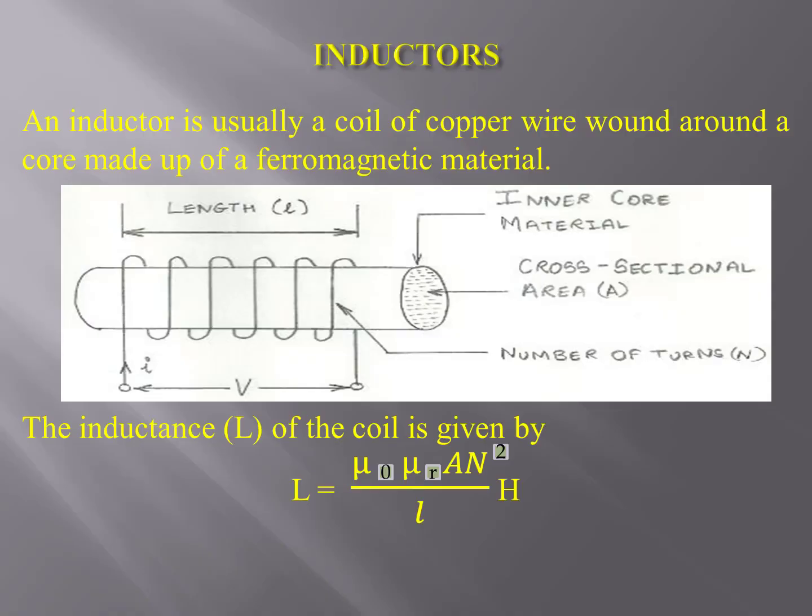Basically, an inductor is a coil of copper wire wound around a core made up of a ferromagnetic material. You can see the constructional view of an inductor on the screen. The inductance of the coil is given by the equation visible on the screen. Where mu_0 is the permeability of free space, which is equal to 1.25 × 10⁻⁶ Henry per meter.